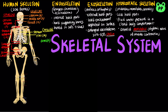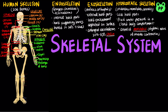The arms consist of 64 bones, including the shoulder bones — clavicles and scapula — the upper arm bone, humerus, the lower arm bones, ulna and radius, and the hand, which contains 54 bones in total, 27 in each hand, including the carpals, metacarpals, and phalanges of the hand.